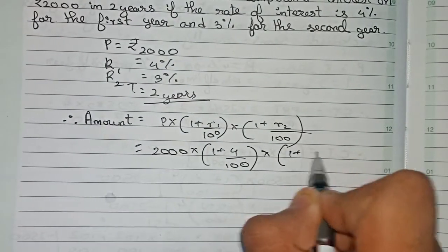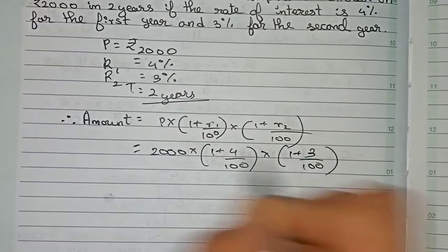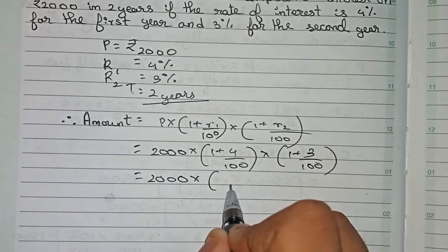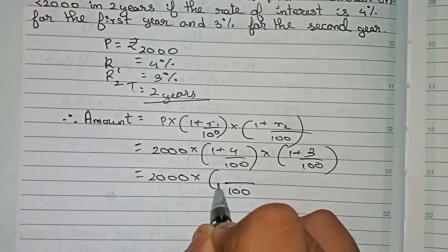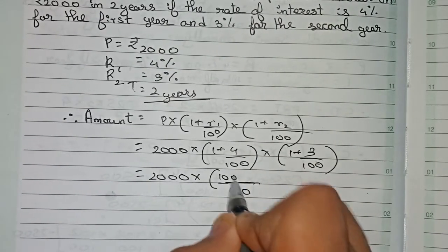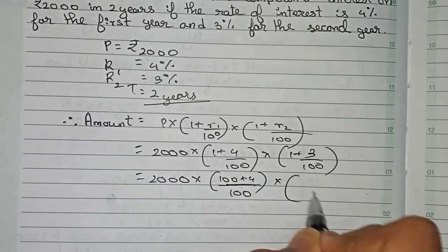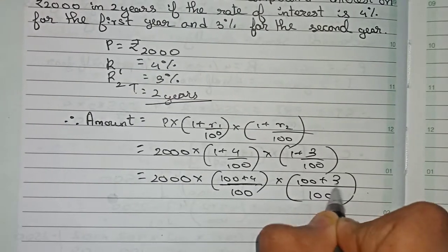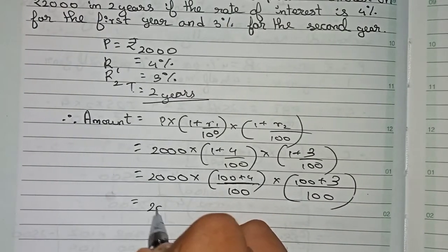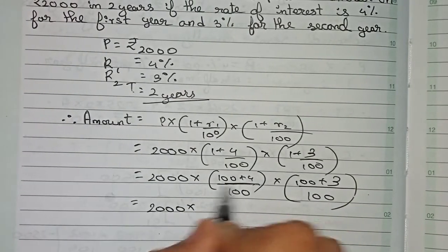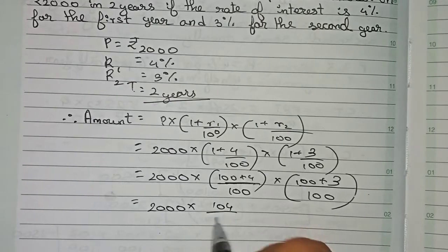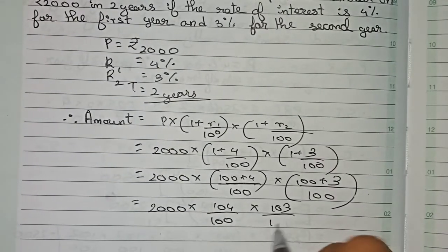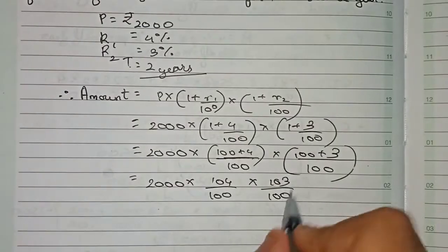Taking 100 as the LCM, we get: 2000 × (100 + 4)/100 × (100 + 3)/100, which becomes 2000 × 104/100 × 103/100. Cancelling the zeros, this simplifies to 2 × 104 × 103 / 10.